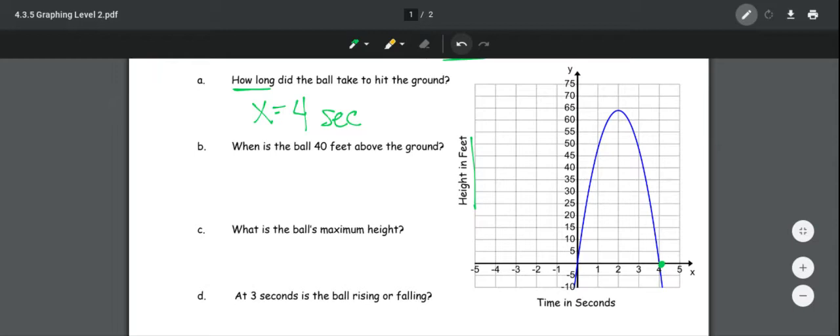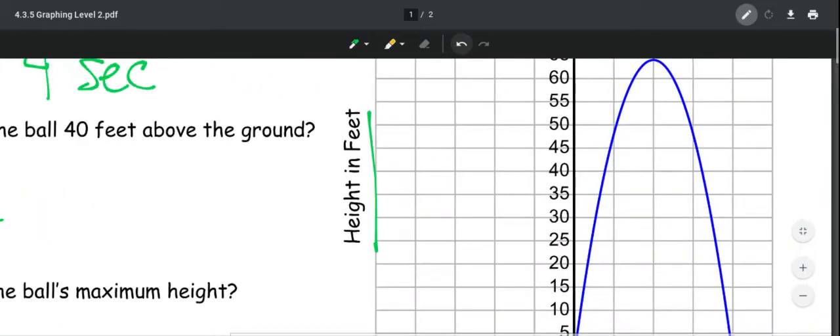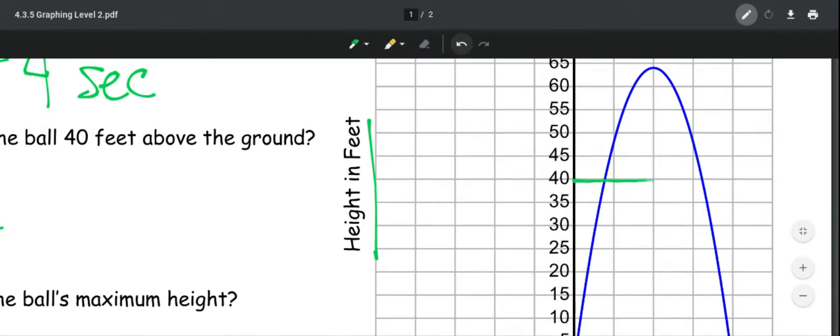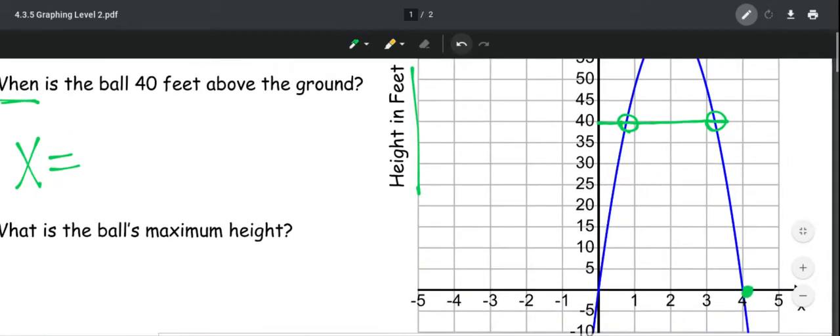When is the ball 40 feet above the ground? So they're asking again for time in seconds. So 40 feet. So if I look here, there's my 40 feet and it's two spots. So when I look at two spots, it's about, what is that? Two thirds of the way.